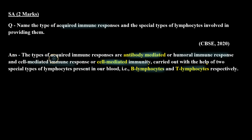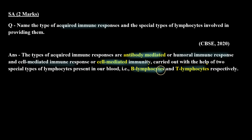So the answer is: the types of acquired immune responses are antibody-mediated or humoral immune response, and cell-mediated immune response or cell-mediated immunity, carried out with the help of two special types of lymphocytes — B lymphocytes and T lymphocytes respectively. I hope this question is clear to you. Thank you.